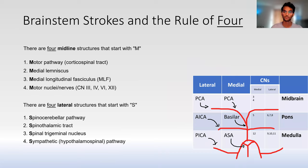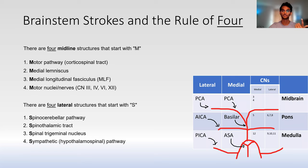Now let's talk about brainstem strokes and the rule of four. The rule of four says each section of the brainstem — medial and lateral — has four important structures. The four midline structures all start with M: the motor pathway or corticospinal tract supplying all motor to the extremities; the medial lemniscus, the continuation of the posterior column; the medial longitudinal fasciculus (MLF), which coordinates lateral eye movement; and motor nuclei and nerves — cranial nerves three, four, six, and twelve.